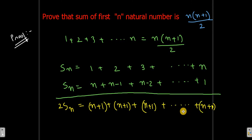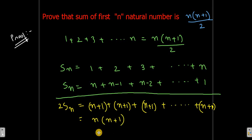So what we can see is that n+1 appears n number of times. Since n+1 is added n times, that gives us 2S_n = n(n+1).